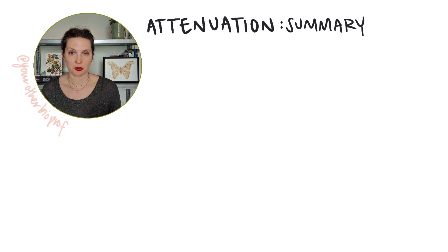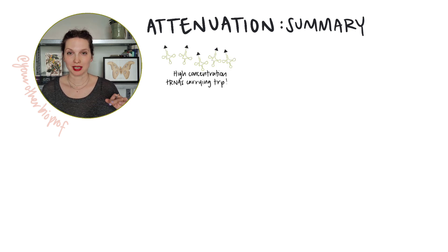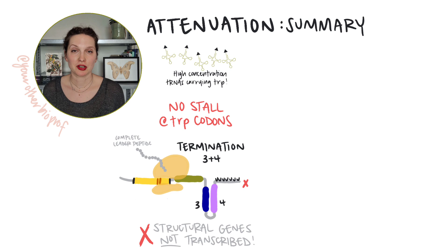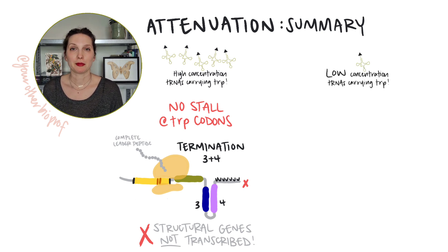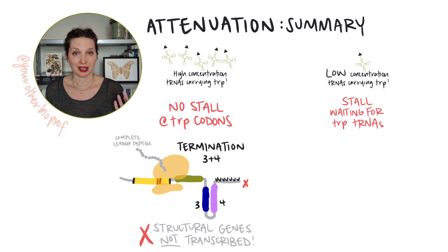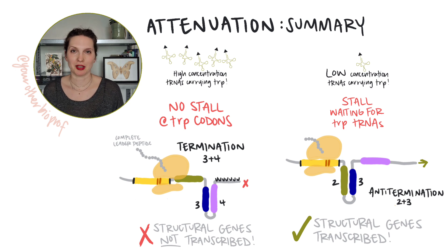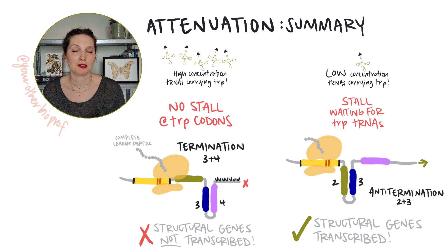It's a little complicated, so let's summarize attenuation. When tryptophan is high, the ribosome can fly — it moves quickly through region one, blocking region two, and allowing the 3-4 termination hairpin to form. That means we don't get transcription of the structural genes, which is fine because we've got plenty of tryptophan. When tryptophan is low, the ribosome stalls on those two tryptophan codons. Because it's stalled, it's not blocking region two, so regions two and three form an anti-termination hairpin, allowing RNA polymerase to keep transcribing into the structural genes to make more tryptophan. Attenuation works for operons with genes involved in the production of amino acids, but it wouldn't work for something like the lac operon — there are no codons that encode lactose because it's not an amino acid.